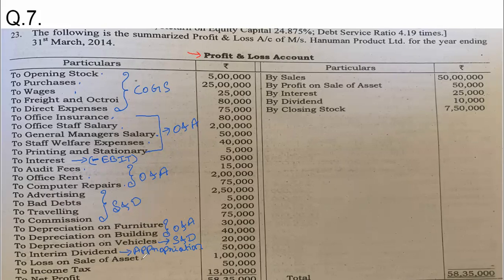Loss on sale of asset — is it an operating expense or a non-operating expense? Loss on sale of asset is a non-operating expense — NOE, non-operating expense. Next, income tax — we deduct it at the end from NPBT.